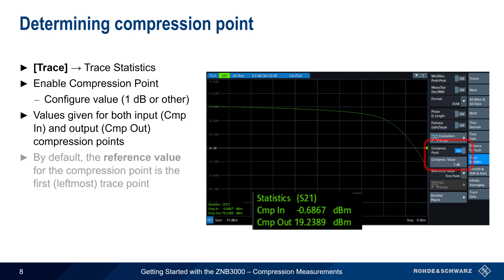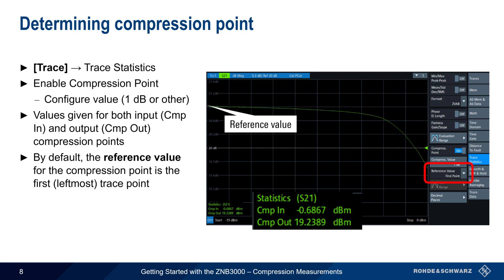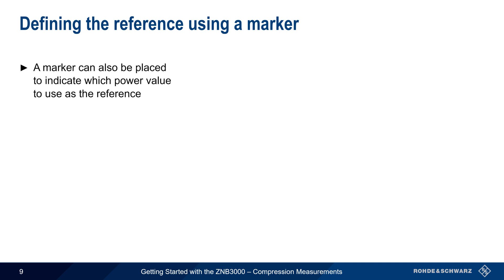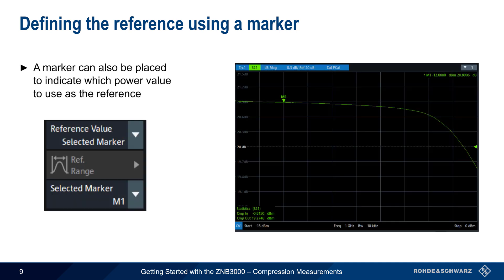By default, the reference value for the compression point calculation is the first, or leftmost, point on the trace. In this example, P1dB is calculated by finding the point at which the gain is 1 dB lower than this default reference value. The reference value can, however, be defined in other ways. For instance, the user can place a marker on any arbitrary point on the trace, and this point will serve as the reference value for compression point calculations.